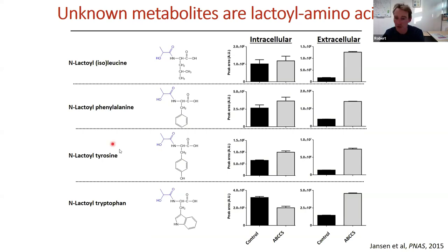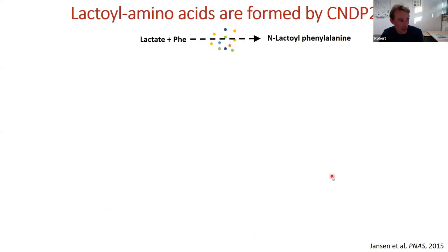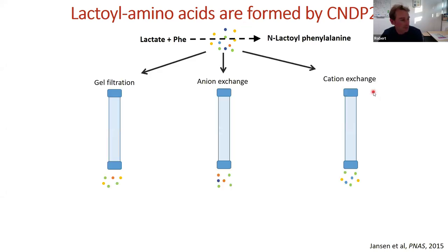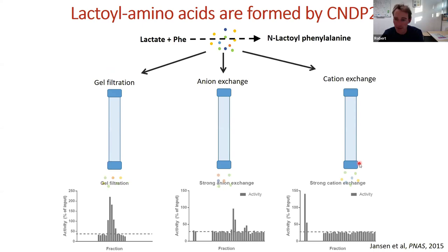Once we solved N-lactoyl phenylalanine, the others were easy — they were all lactoyl amino acids: N-lactoyl leucine, phenylalanine, tyrosine, and tryptophan — a whole new family of metabolites. To find their function, we tried to link them to the biosynthetic enzyme. It turned out that adding lactate and phenylalanine to a whole-cell protein lysate produced this metabolite, allowing us to isolate the biosynthetic enzyme through parallel fractionation — gel filtration, anion exchange, and cation exchange — followed by activity assays.